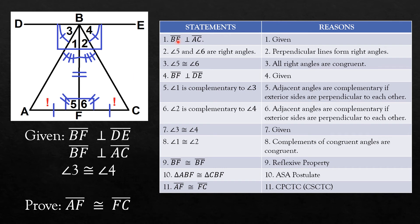The first statement is that line segment BF is perpendicular to line segment AC, which was given. This becomes our first statement because it is more convenient than the other. The second statement is that angles 5 and 6 are right angles because perpendicular lines form right angles. Angles 5 and 6 are congruent because all right angles are congruent. Next, line segment BF is perpendicular to line segment DE, which was given. Then, angle 1 is complementary to angle 3 and angle 2 is complementary to angle 4 because adjacent angles are complementary if exterior sides are perpendicular to each other.